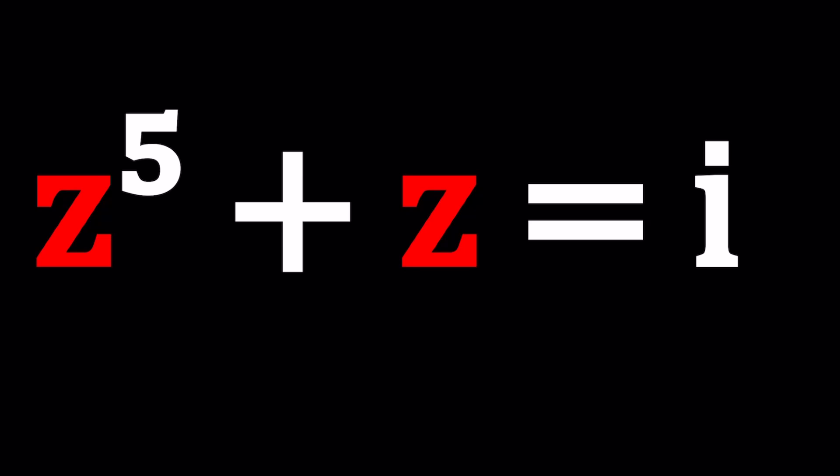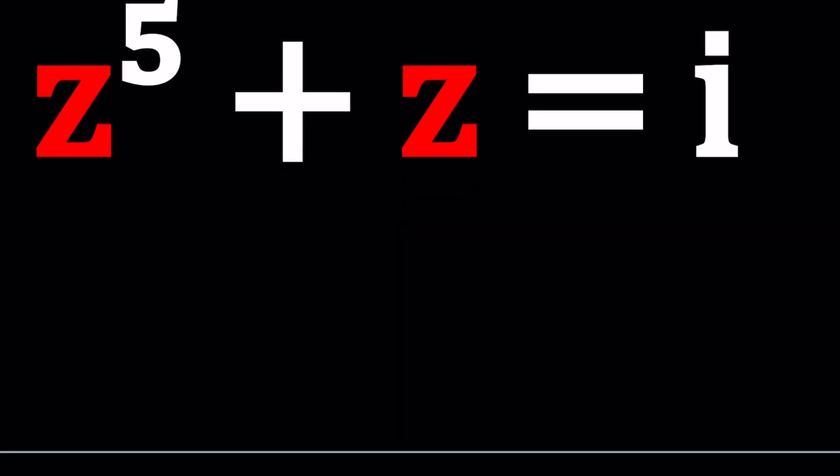Now when you get a quintic equation, unfortunately there's no formula that you can use, but you can try to factor it. Especially, this is a very depressed quintic. It's missing the quartic, it's missing the quadratic term, and it's also missing the cubic term. So let's go ahead and try to factor this.